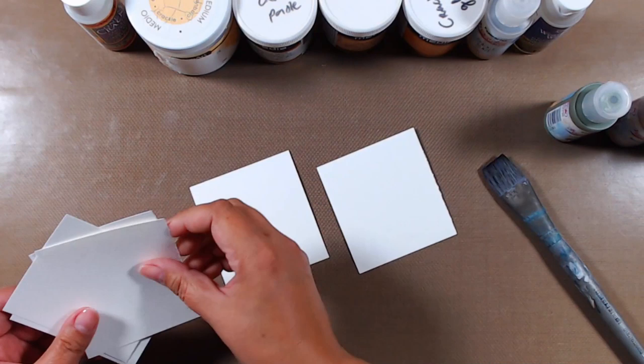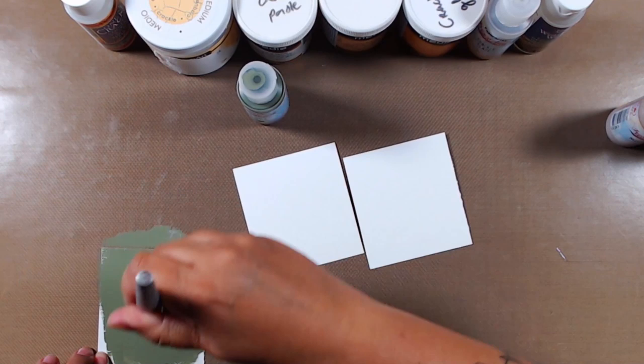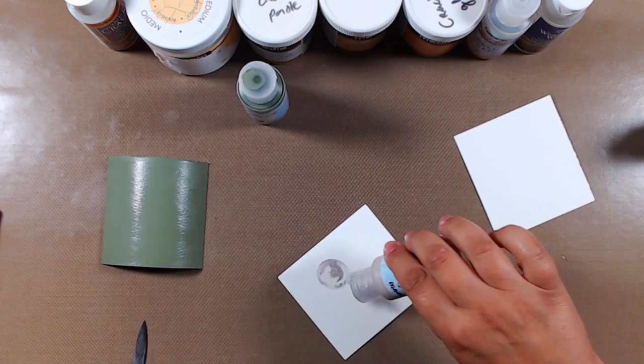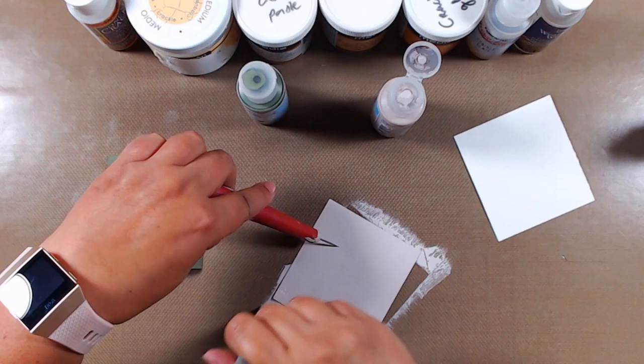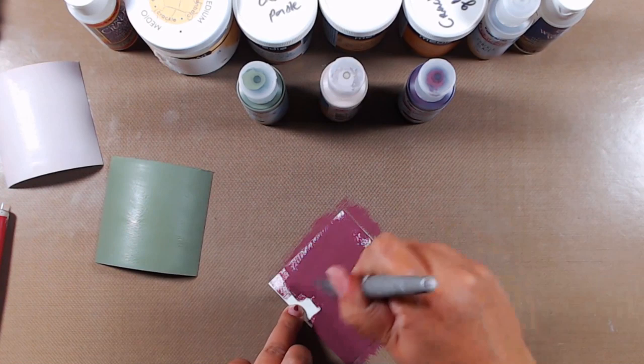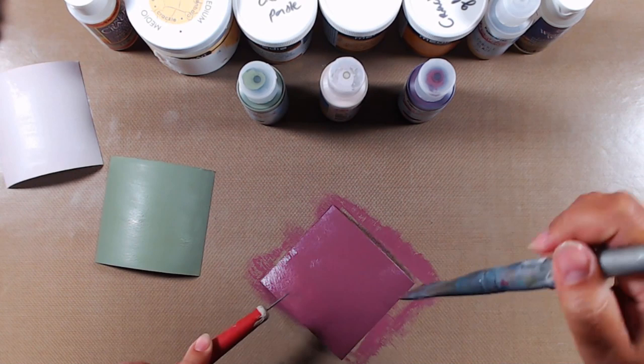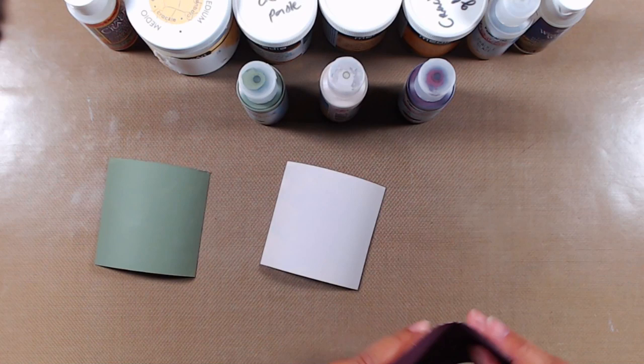So let's get started by prepping some backgrounds. I'm just covering some watercolor paper using fresco finish chalk paint, just because I like them, and just because I like the colors, and just because I like the coverage. But it could be a regular acrylic paint that doesn't change the effect of the crackle medium. At this stage, I can still use my heat gun to make sure that everything is completely dry, and now I can start playing with the crackle mediums.